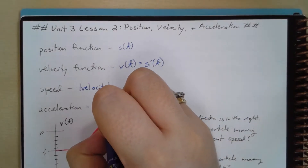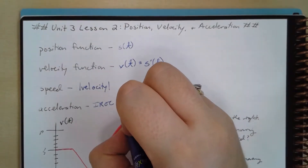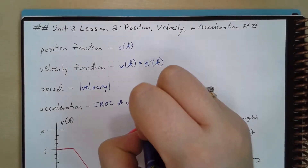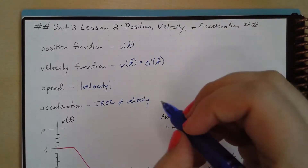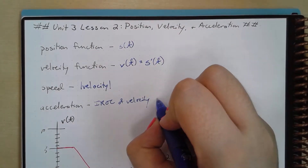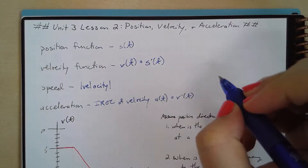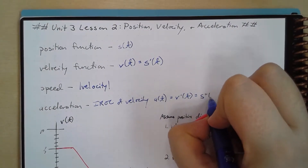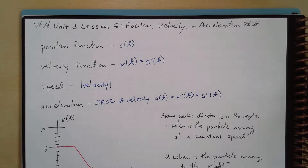Acceleration is the instantaneous rate of change of velocity — it tells us how quickly we speed up or slow down. It's the change of velocity with respect to time, written as a of t, which you can think of as the derivative of velocity, and therefore the second derivative of the position function. Now let's apply some of this by looking at a graph.